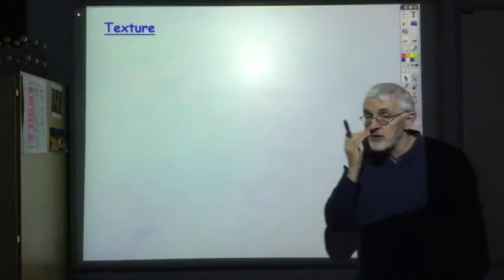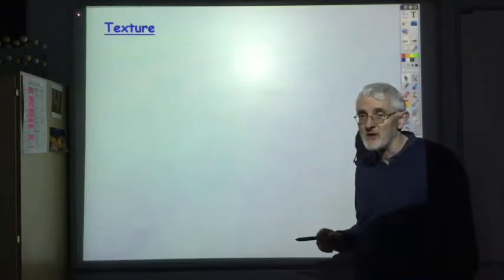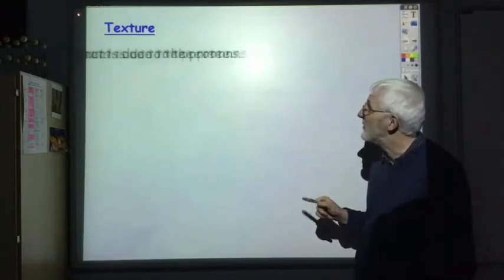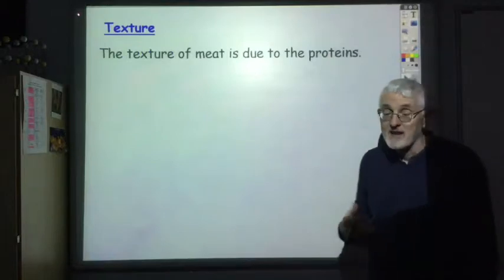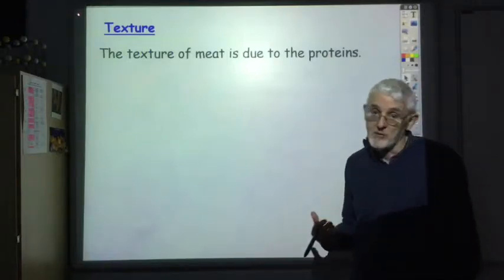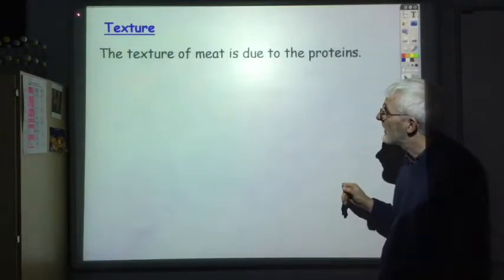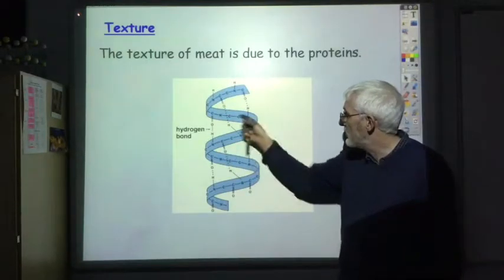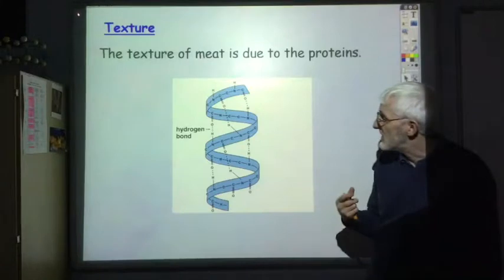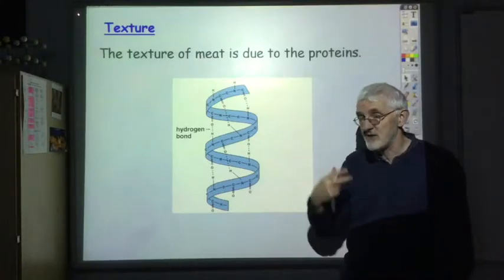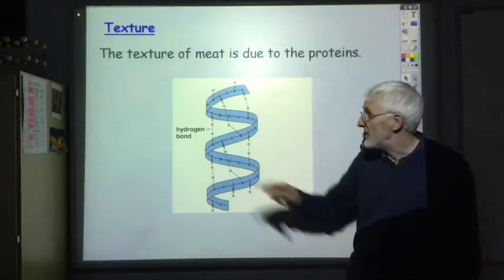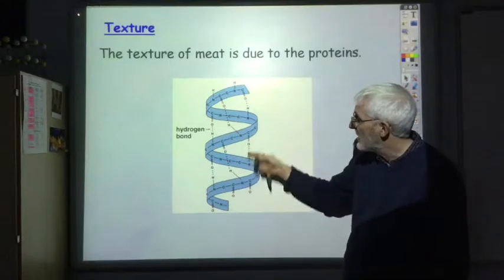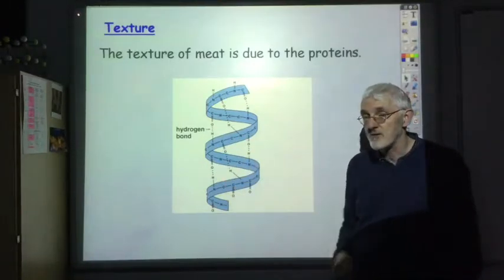Moving on now to texture, and within this section we're really only going to look at the texture of meats. And the texture of meat is due to the protein which the meat is made from. And if this is a large protein molecule, the texture is due to the structure of the protein which is determined by the hydrogen bonding you get between different parts of the protein molecule.